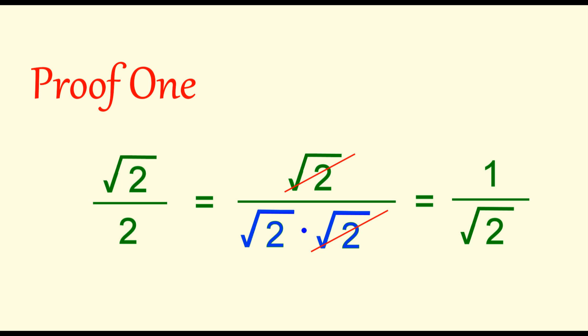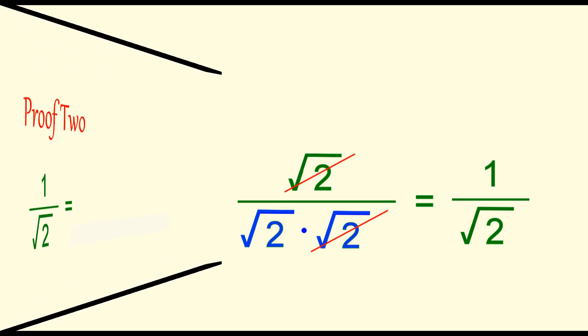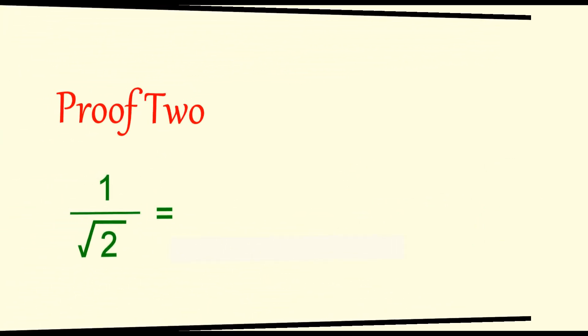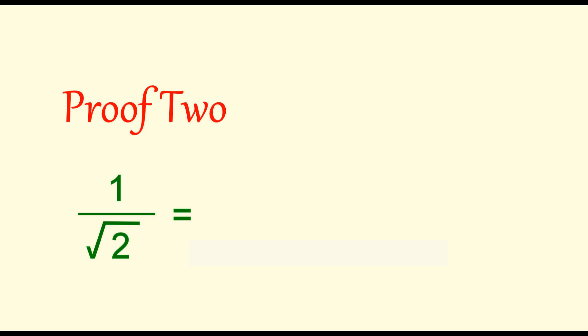Ready for proof 2? This time we'll start with 1 over square root 2. We multiply both the top and the bottom by square root of 2. Why does that work? Because the denominator now becomes 2. And there we have it. Square root 2 over 2.